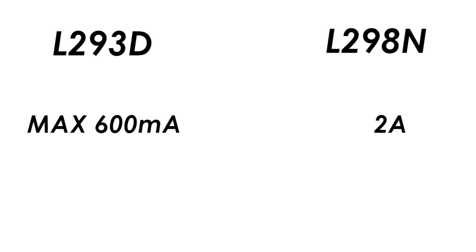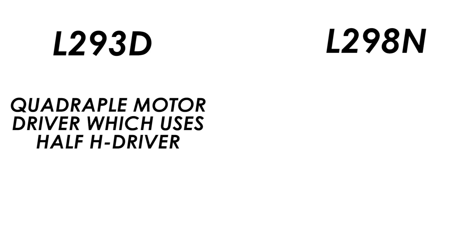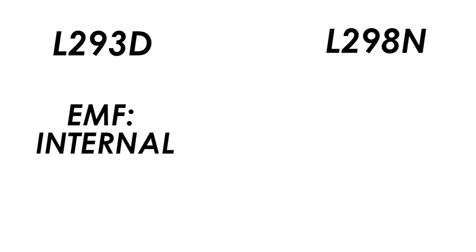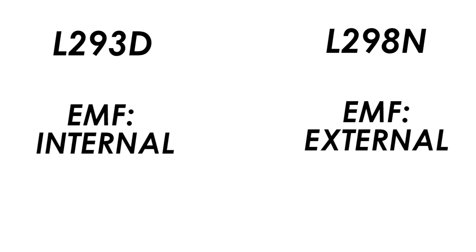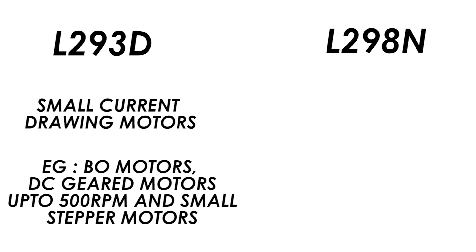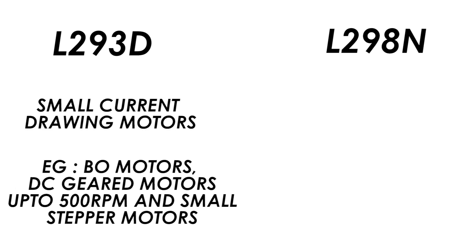The L293 is a quadruple motor driver which uses half-bridge drivers, while the L298 uses dual full-bridge drivers. Flyback diodes are provided internally in the L293D but must be provided externally in the L298N. The L293D is suitable for small current-drawing motors like BO motors or DC geared motors up to 500 RPM, and small stepper motors drawing less than 600 milliamperes at their highest torque rating.